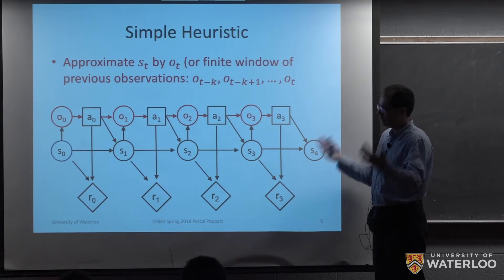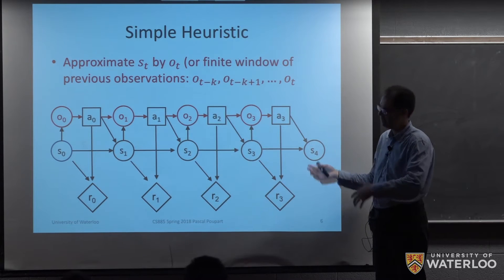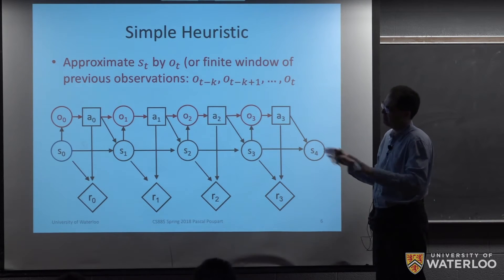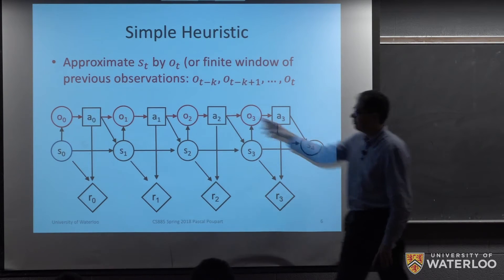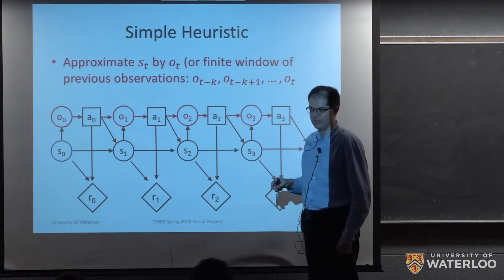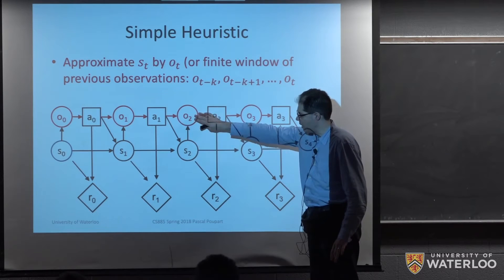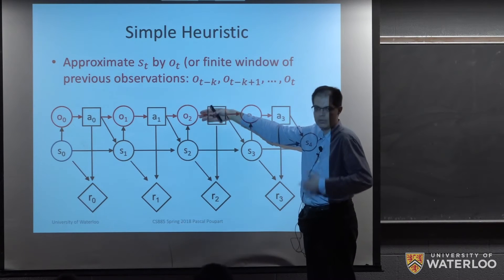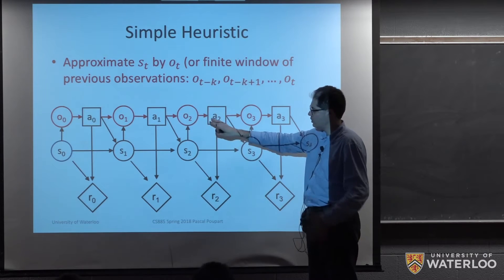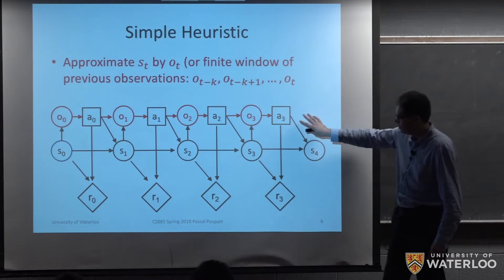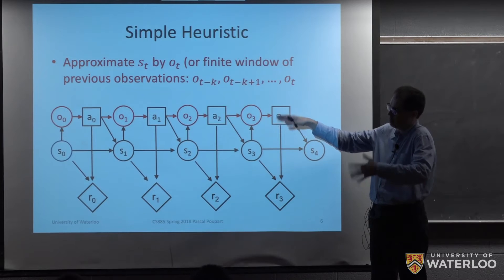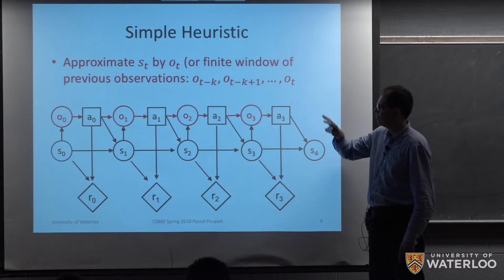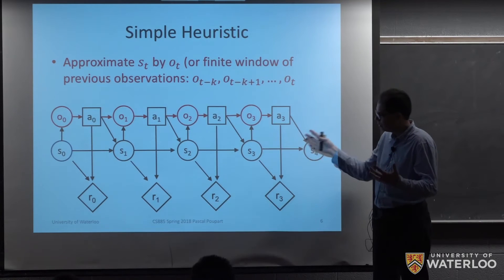If we want to design an algorithm for the partially observable case, a simple heuristic approach is to treat the last observation as a proxy for the last state. This is an approximation because the observation is generally less informative than the state. We choose our actions based on the last observation. When you look at this graph, it's a bit more complex than a fully observable MDP, but it doesn't look so bad because we don't have all those arcs we saw before. This leads to some tractable solutions.